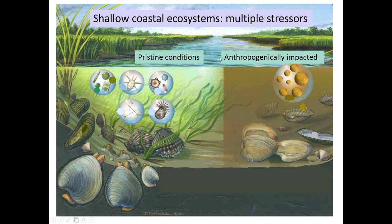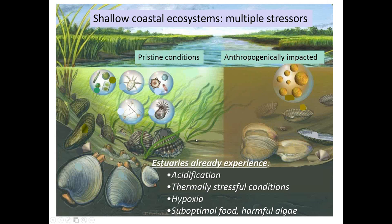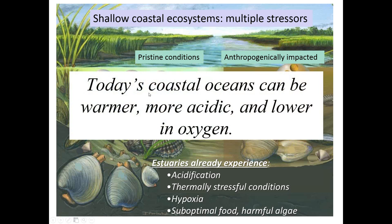As we think about our coastal ecosystems, under pristine conditions they are generally ideal habitats for fisheries — something on the order of 80 or 90 percent of U.S. fisheries organisms spend at least part or all of their time in estuaries. But as those estuaries become anthropogenically impacted, there's a whole host of stressors that can show up: acidification, harmful algal blooms or non-optimal food, and low oxygen or hypoxia. So today's coastal oceans can be warmer, more acidic, and lower in oxygen than would be ideal for hosting marine fisheries. That fusion is here now.